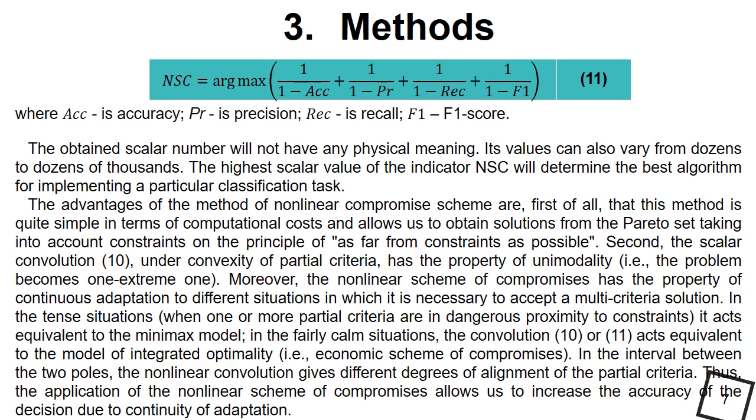Second, the scalar convolution 10 under convexity of partial criteria has the property of unimodality. Moreover, the non-linear scheme of compromises has the property of continuous adaptation to different situations in which it is necessary to accept a modality multi-criteria solution.